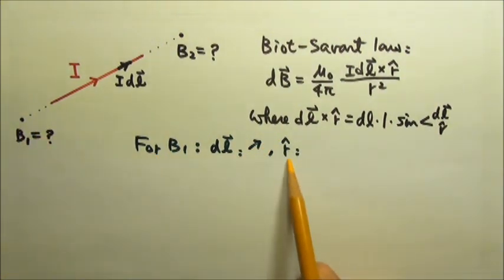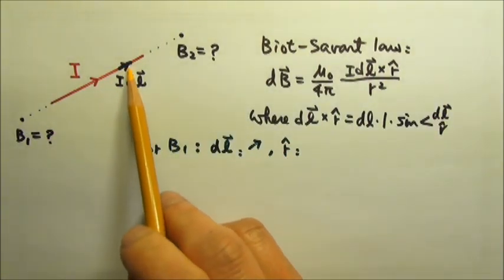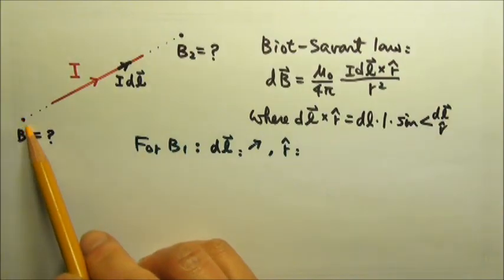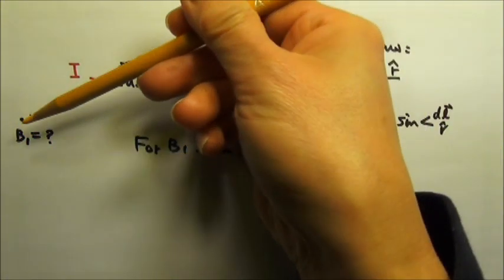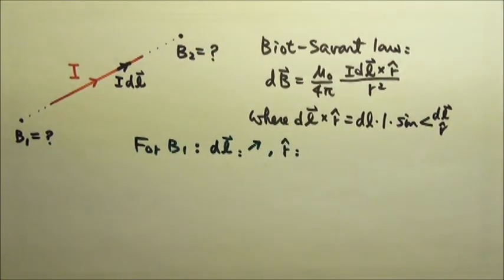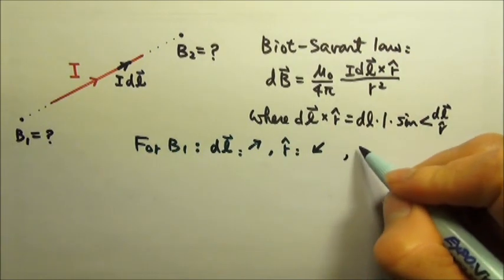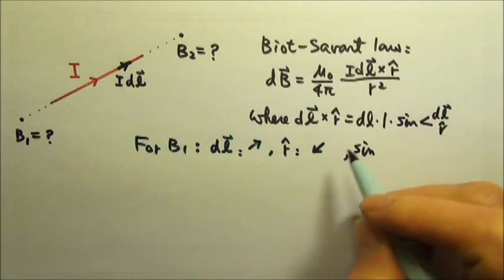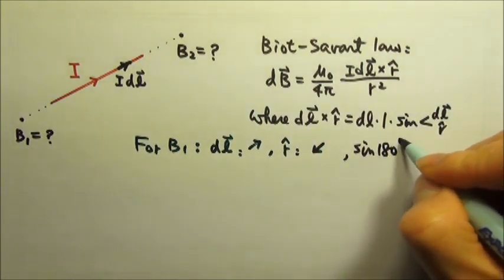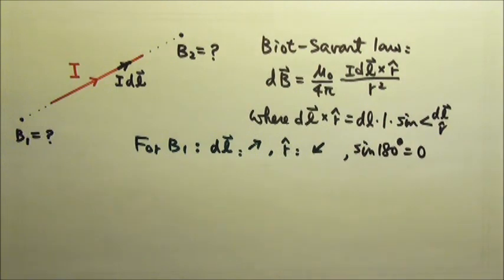For B1, the unit vector r is in the same direction as r, and r goes from the source to the location we're interested in. So the unit vector r goes that way, opposite to the direction of dl. So sine the angle between these two would be sine 180 degrees, and sine 180 degrees is zero.